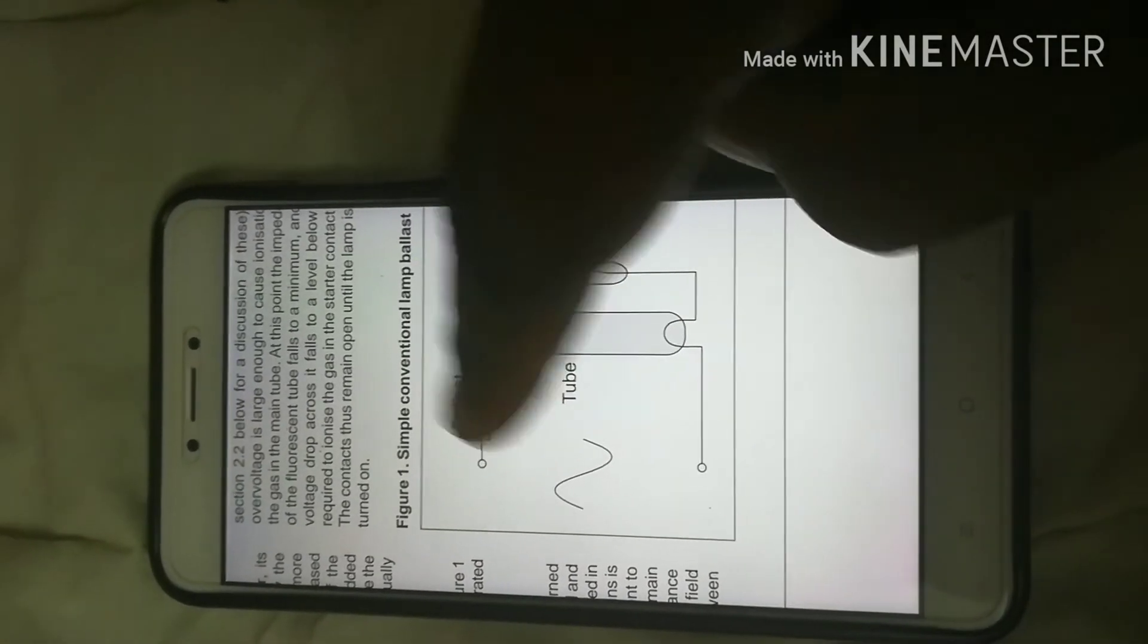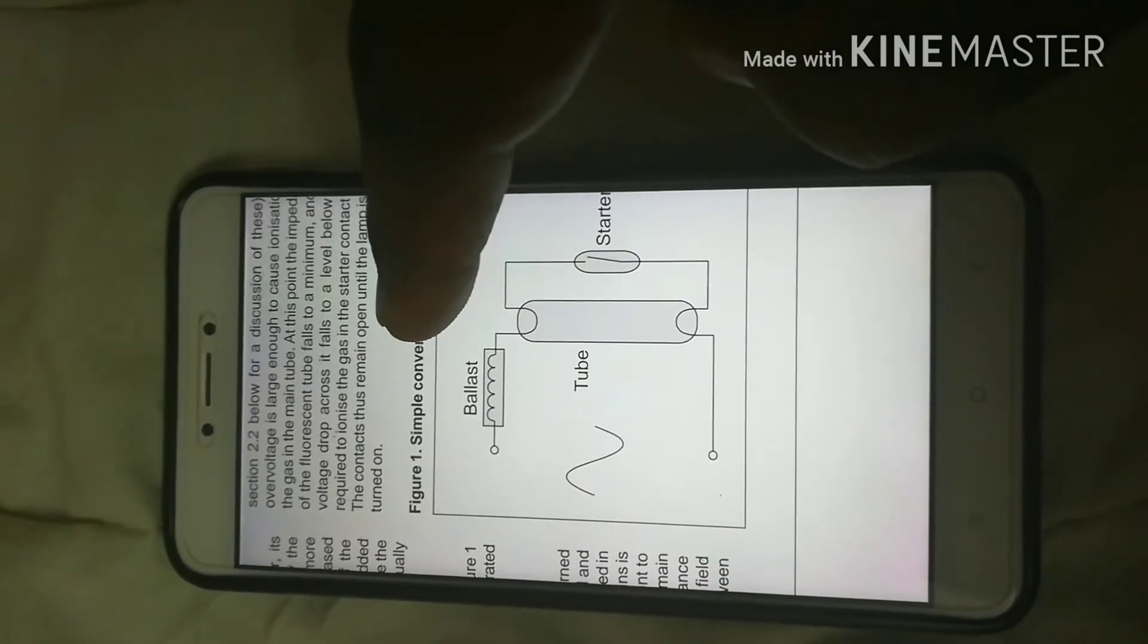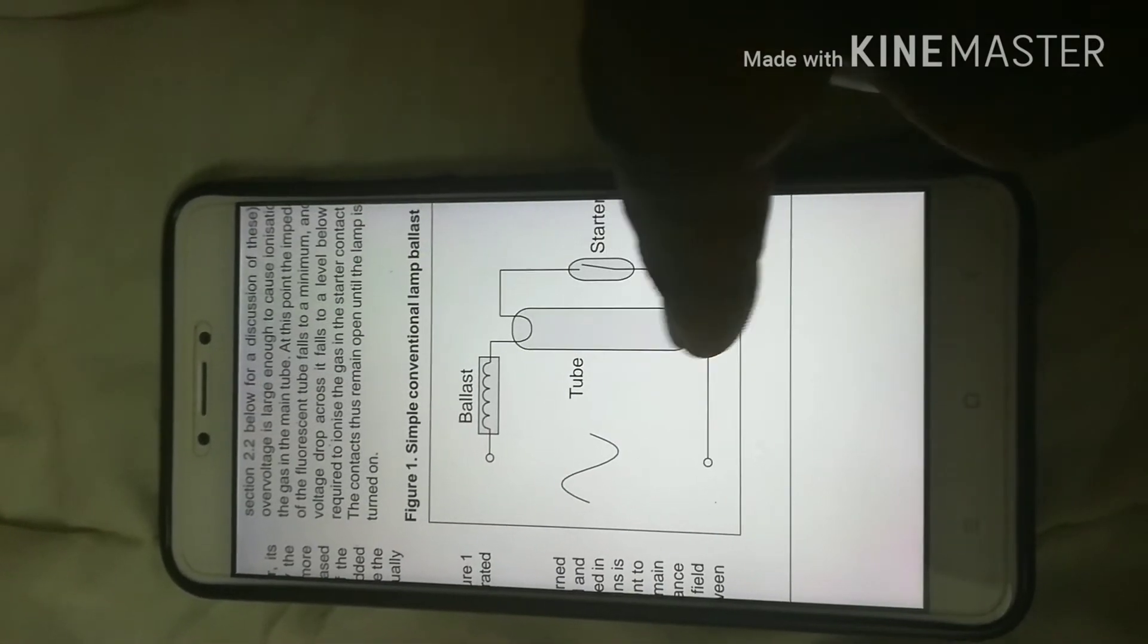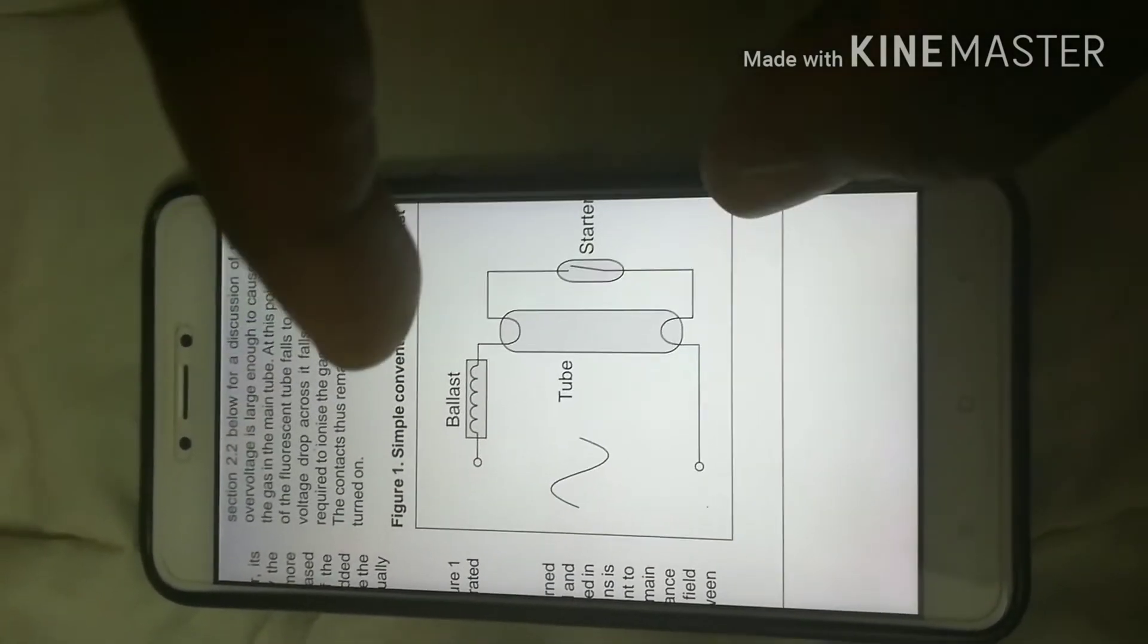And then the ballast should limit the amount of current, as a little amount of current is enough to sustain this particular voltage across this one and sustain the lamp glowing.